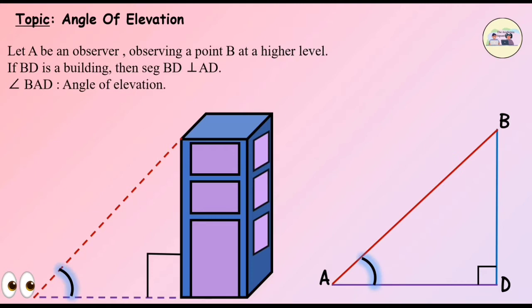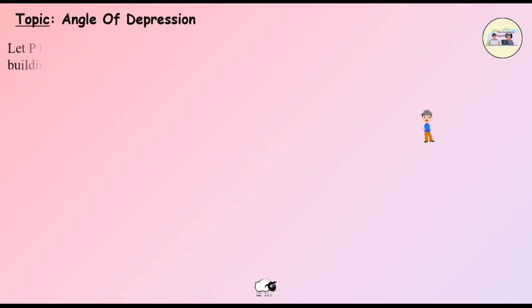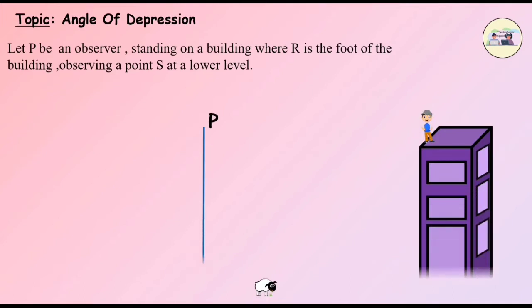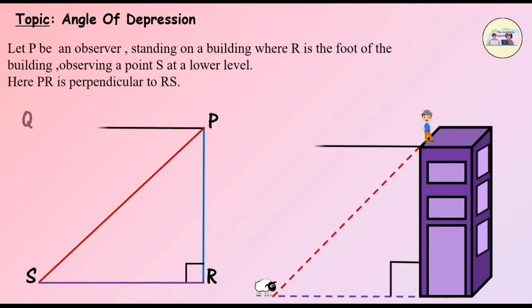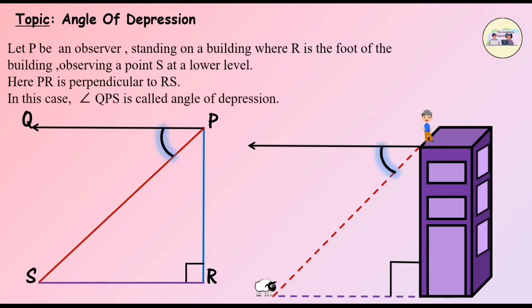Angle of Depression: Let P be an observer standing on a building where R is the foot of the building, observing a point S at a lower level. Here, PR is perpendicular to RS. In this case, angle QPS is called the angle of depression. Please remember, the angle of elevation and angle of depression are always measured from the horizontal line.